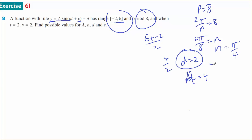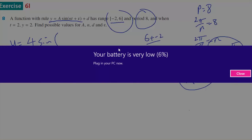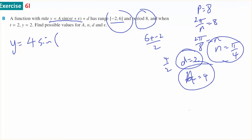So a equals 4, d equals 2, and n equals π on 4. What I have so far is y equals 4 sine of π on 4 times t plus e, plus 2.